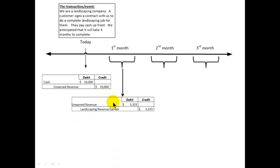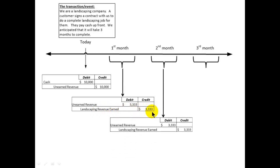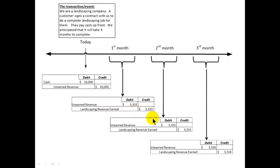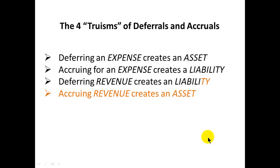As I do the work and earn this revenue each month, I reduce the liability by debiting it for one-third of the amount, and I credit revenue earned for that one-third. I do that each month until the liability is gone and I have fully earned the revenue. Each month gets its appropriate share of the revenue — three thousand three hundred and thirty-three dollars per month.